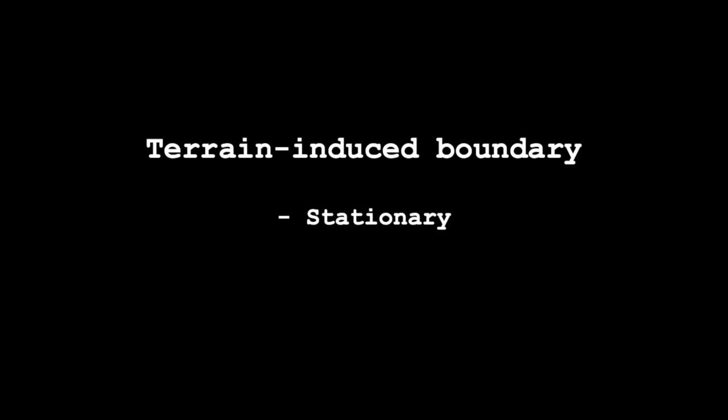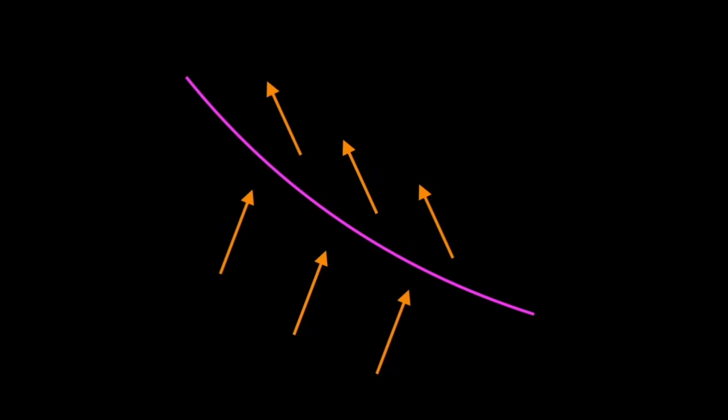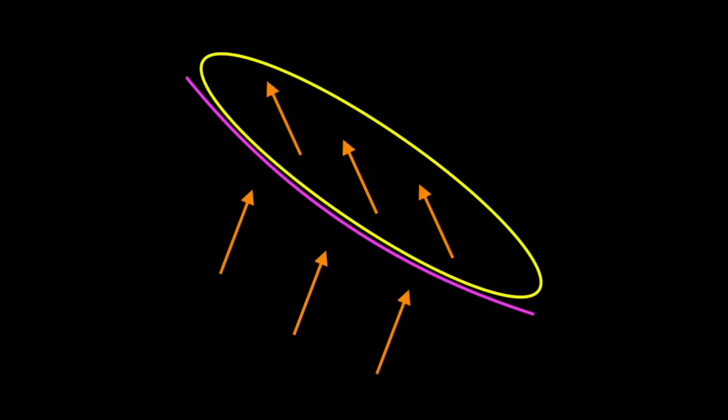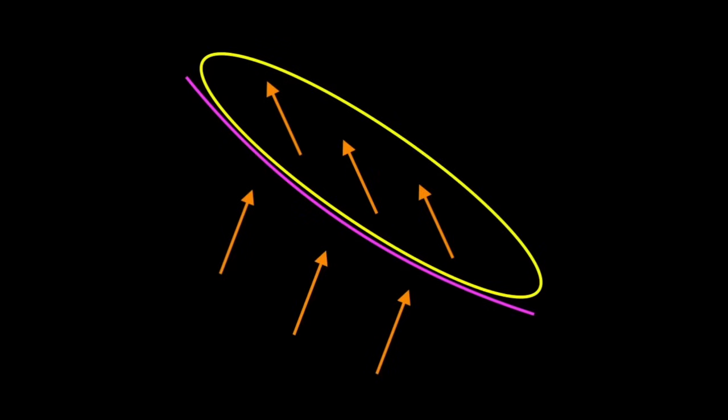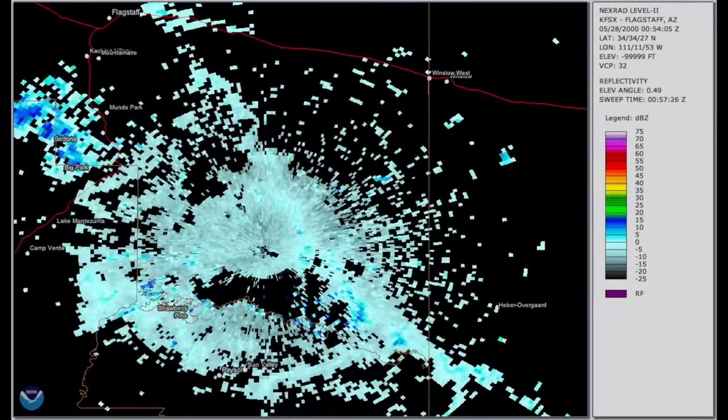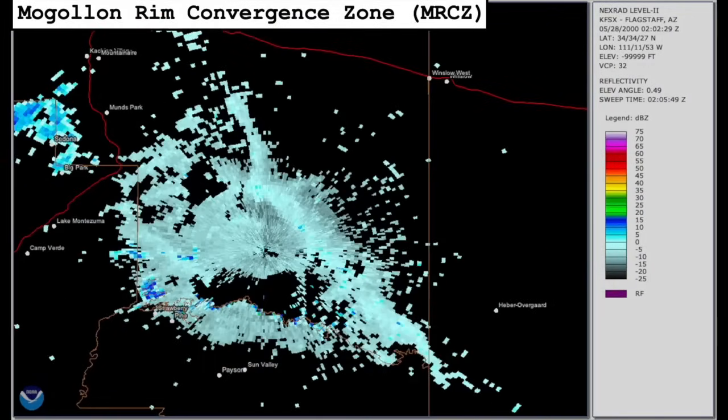Terrain-induced convergence boundaries can also show up well on radar. These develop when topographical features manipulate airflow around them such that low-level winds converge, and they can provide the impetus for storm development. These boundaries are typically stationary, but because they are simply wind shift boundaries and do not involve temperature gradients, it doesn't matter which side of the boundary storms develop on or migrate into in terms of whether they are elevated or surface-based. Along the boundary itself and the side of the boundary that has more backed low-level winds tends to be most favorable for tornadic supercells as long as the other ingredients are in place. In this example, the fine line on reflectivity you see here denotes Northern Arizona's Mogollon Rim Convergence Zone, or MRCZ.